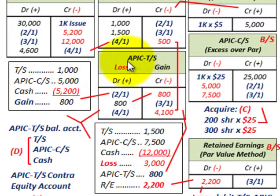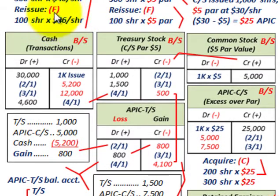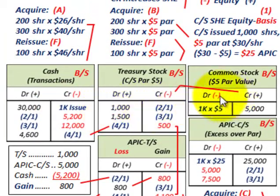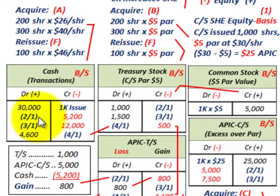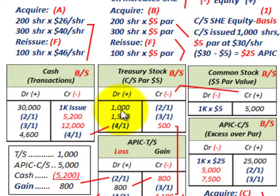Additional paid-in capital for treasury stock is a balancing account between the treasury stock account, additional paid-in capital for common stock, and the cash account. Now for the 2-1 entry acquiring 200 shares at $26 per share, equating to $5,200: we credit our cash account by $5,200. For treasury stock (step B), we debit it for $1,000 — that's 200 shares at $5 par value.